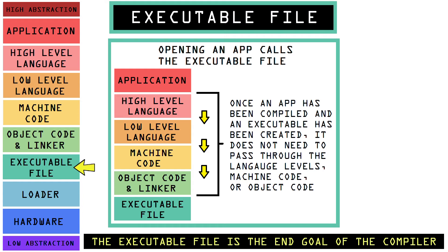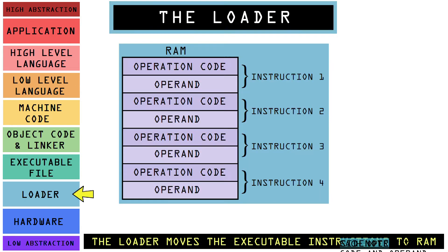Finally we get to the compiled executable file — the compiler's job is over. Once you have a working application on your computer, the abstraction process no longer goes through the programming language, assembly language, or machine code. Once the app has been compiled, it has taken care of all those steps. You are running the application based on the executable file which is now ready to pass instructions to the CPU, handled by the next step known as the loader.